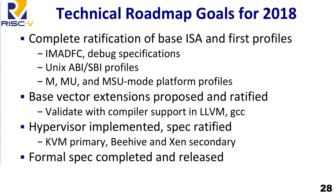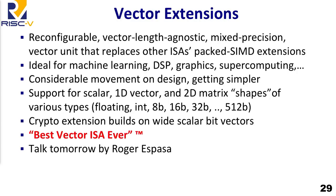For 2018: get ratification done; get the standard written in a form everyone can agree on for instruction set specifications and platform profiles; work on vector extensions and get those proposed and ratified; implement the hypervisor before freezing that standard — focusing on KVM as the primary target but also interested in bhyve and Xen. We want a few different hypervisors to try those extensions. We'd also like to get the formal spec completed and released at least for the base instructions.